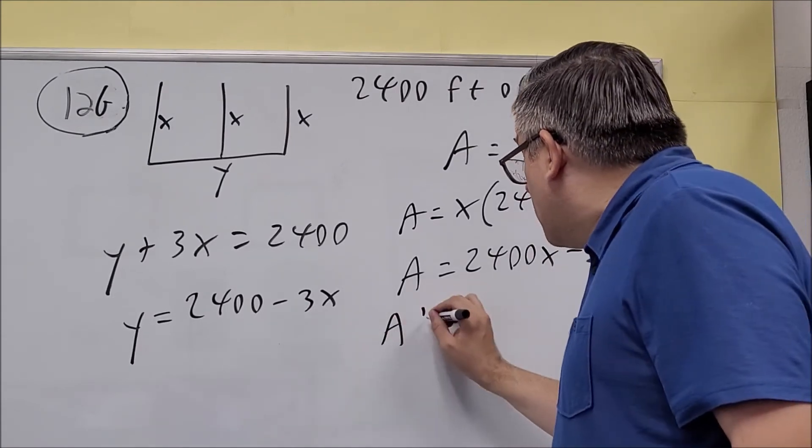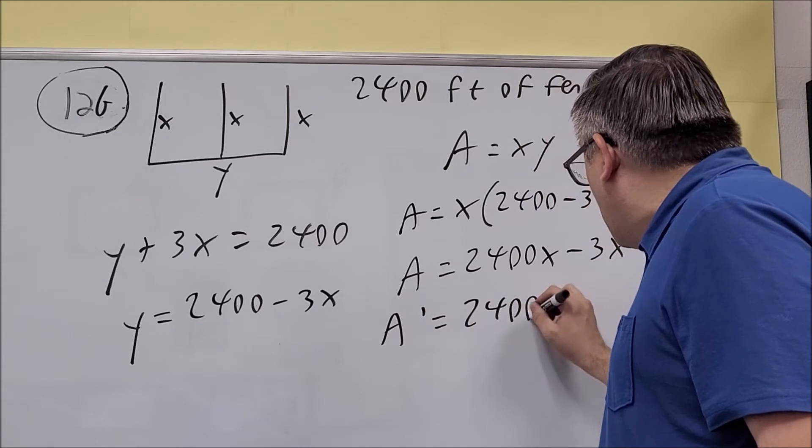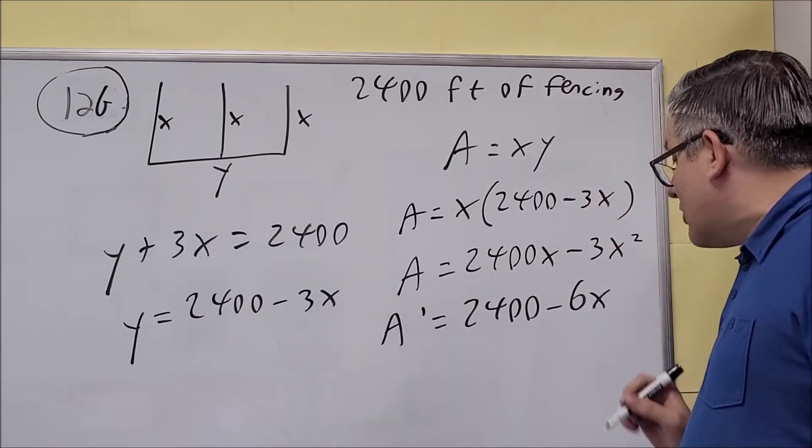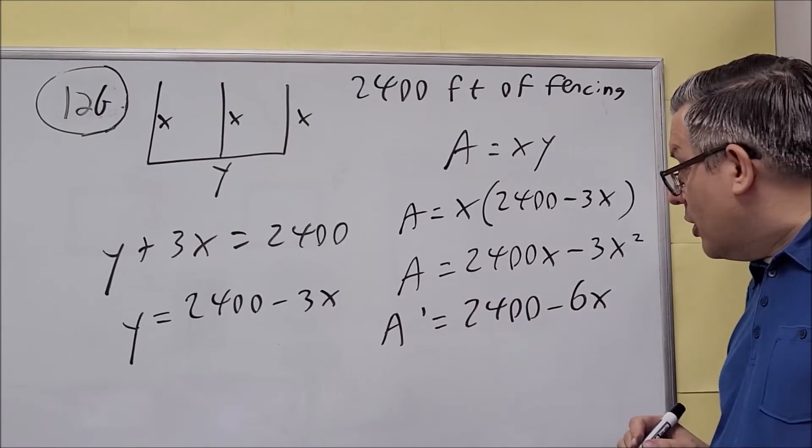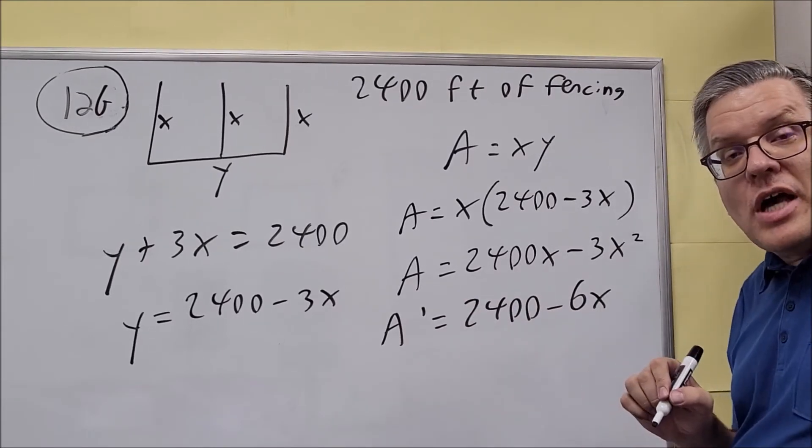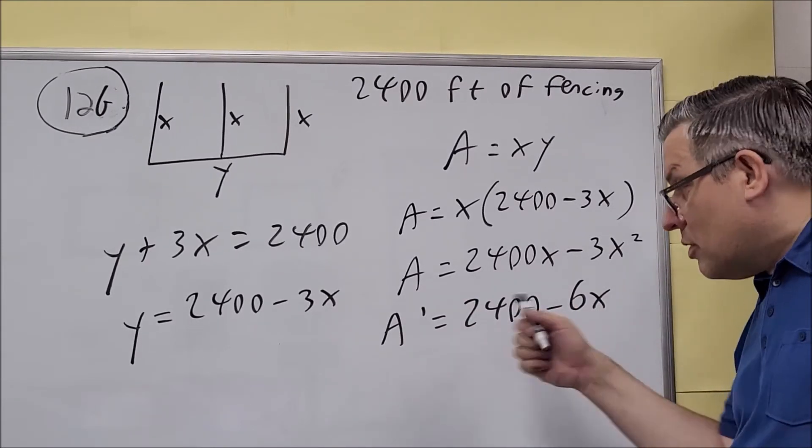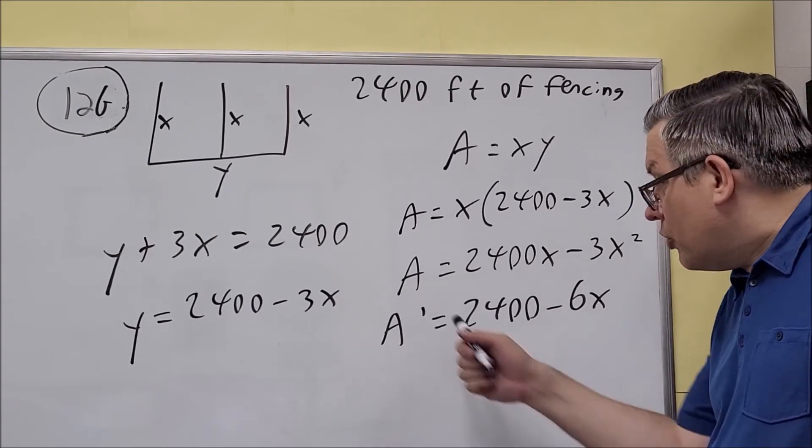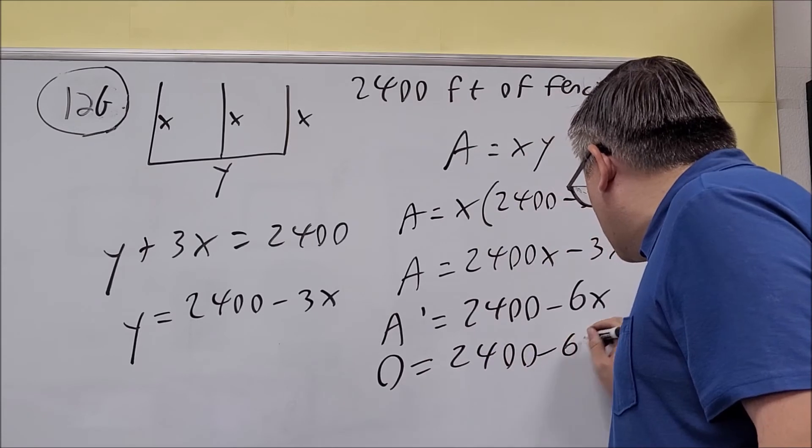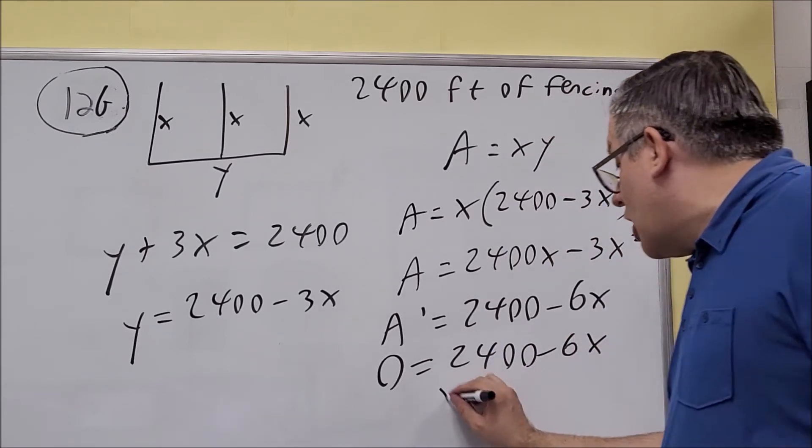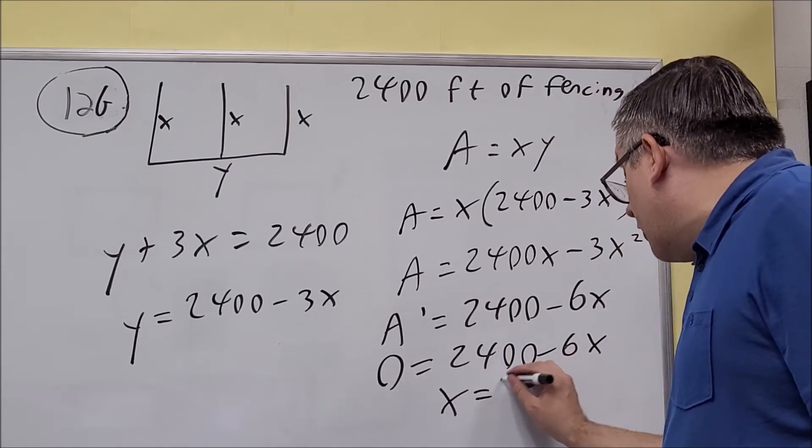A prime equals 2,400 minus 6x. Now we set this equal to zero because these optimization problems require you to set the derivative equal to zero. Zero equals 2,400 minus 6x. If you solve for that, you get 400.